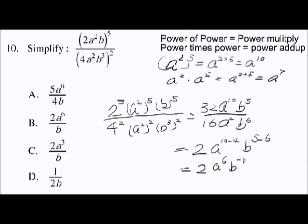b to the power of negative 1 means b to the positive 1 moves to the denominator, so the final answer is 2 times a to the power of 6 divided by b. Thank you for watching.